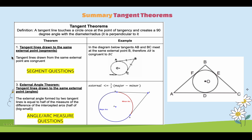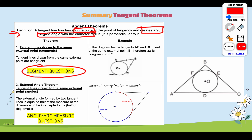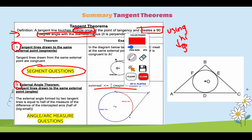Just a summary of these tangent theorems: remember the definition — a tangent line touches the circle once and creates a 90-degree angle with the diameter or radius. If you're looking for segments when tangents are drawn from the same external point, use theorem one. If you're looking for angles or arc measure questions, use the exterior angle formula. Be mindful of complex diagrams and use a highlighter to separate and figure out each different pair of tangents.